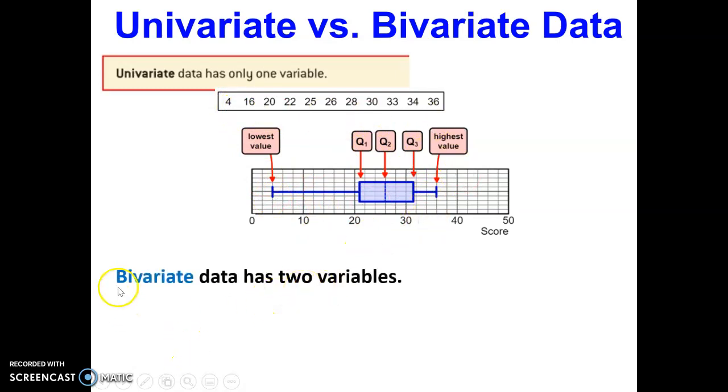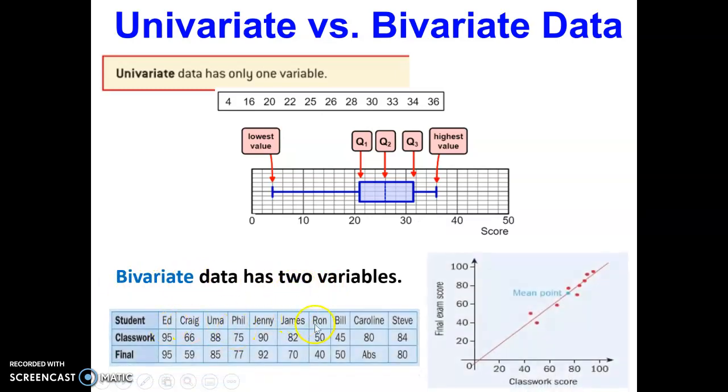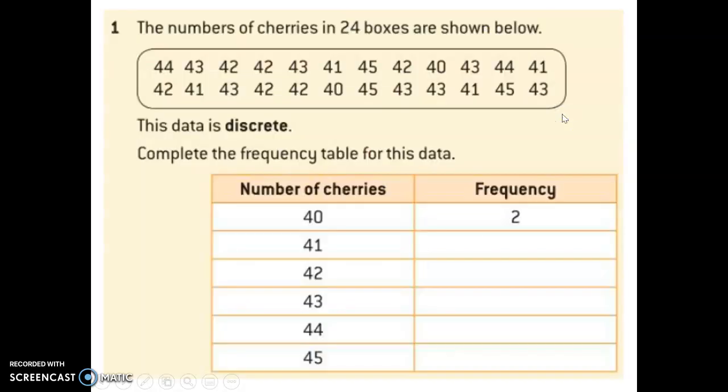Bivariate data has two variables. Here's an example of a bivariate data set. We have a group of students, but we have two variables related to them. One is their classwork grade and their final exam grade. When we present two sets of data, we often present them in what is called a scatter plot, with one axis representing one variable and the other axis representing the other variable. In this lesson, though, we're going to concentrate on univariate data for now.